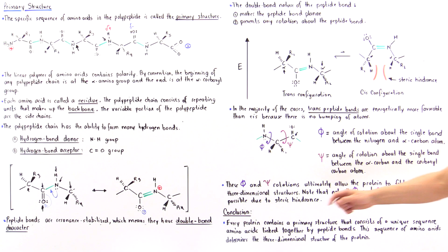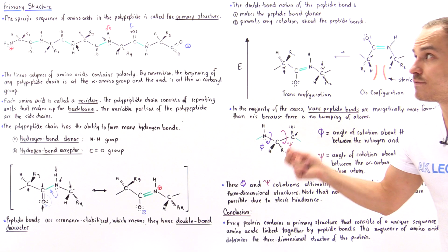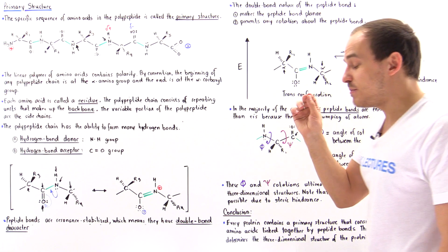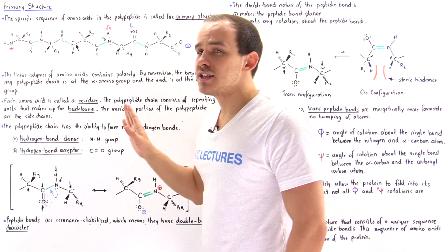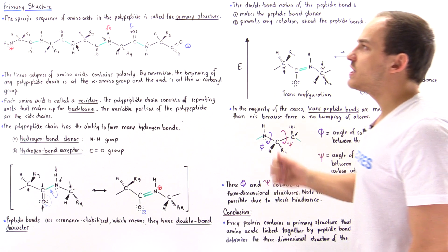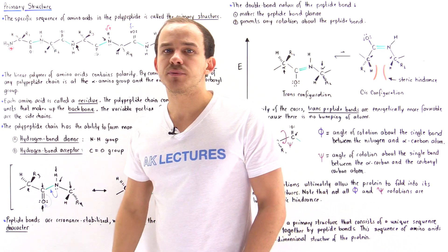So what we conclude is that every protein contains a primary structure, which is basically a specific sequence of amino acids that is unique to that specific protein. And it's the sequence of amino acids that ultimately determines what the three-dimensional structure of that protein is.